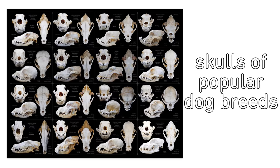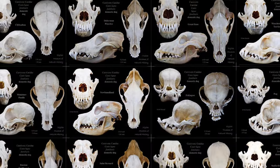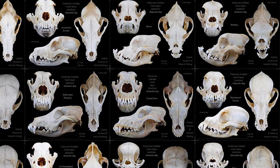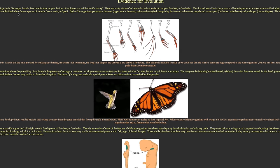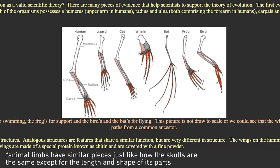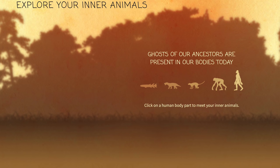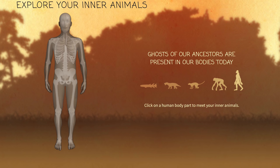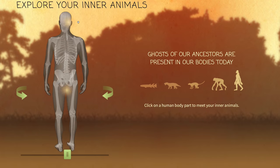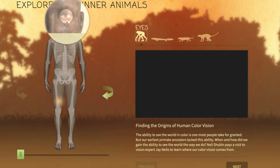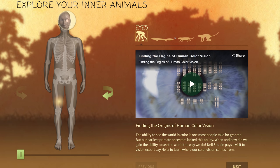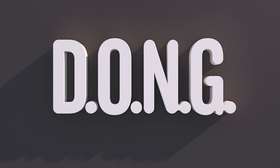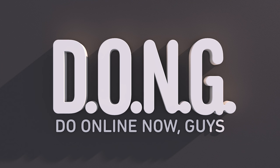Although sometimes dog breeding can go horribly wrong, the system of genetics that causes these breeds to exist is the same one that created all the diversity of creatures on the planet. And you can see this in inner animals. This site has been shown previously on DONG, but it's a beautiful example of how things we take for granted are caused by very specific needs of our ancient ancestors. Things are changing every day, and we're going to look at those things with some DONGs — things that you can do online now, guys.